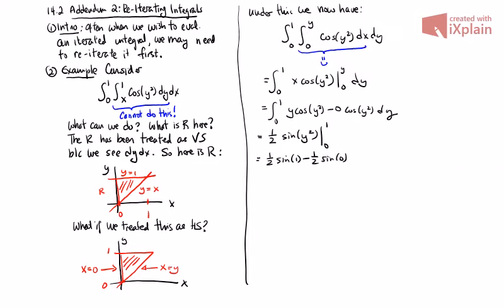So the thing to see here, the point I want to make, is that sometimes we can make a seemingly impossible integral possible by changing the way that we've iterated it.